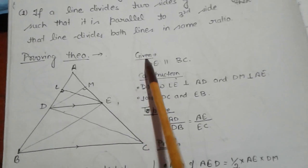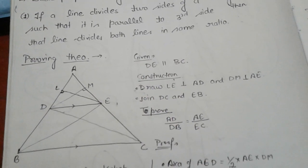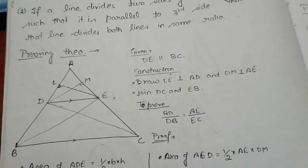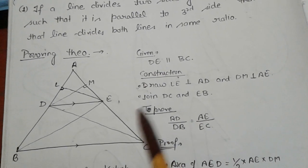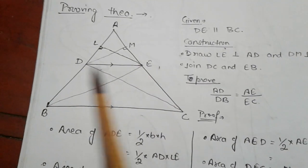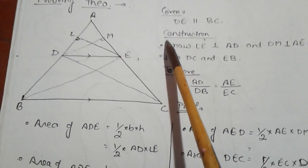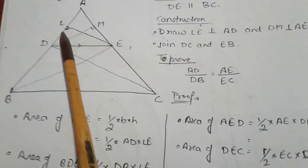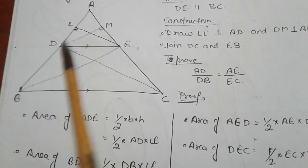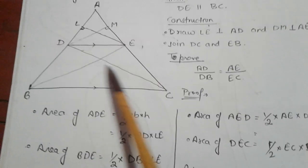Since DE is parallel to BC, this is the condition for the Basic Proportionality Theorem — BPT will only work if DE is parallel to BC. For construction, we have to draw LE perpendicular to AD, and we have to draw DM perpendicular to AE.